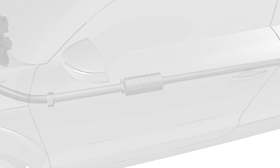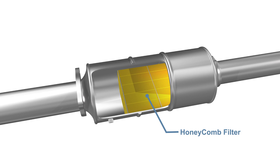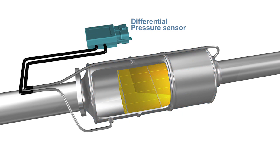The design of the DPF consists of a honeycomb filter monolith and is encased in a metal shell, just like a catalytic converter. Connected to it is a differential pressure sensor with pipes coming out of the inlet and the outlet of the DPF. We'll cover this shortly.